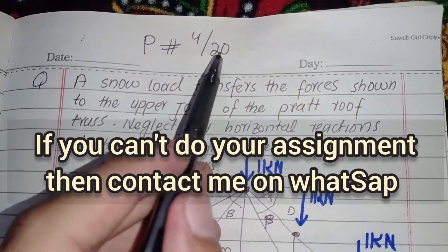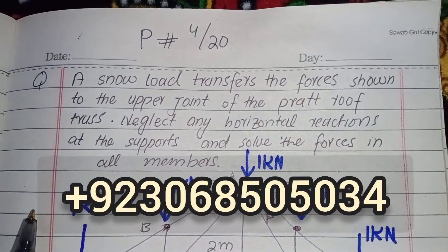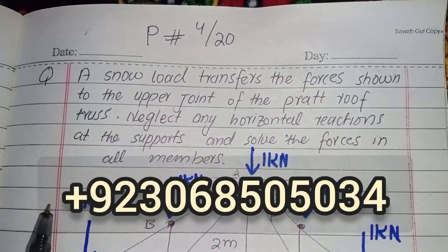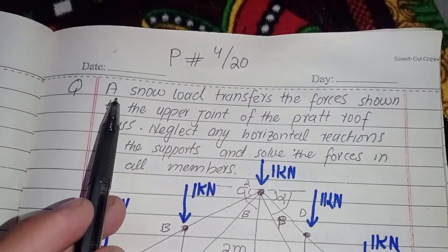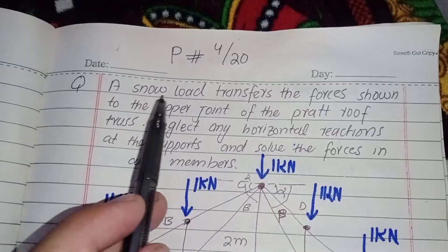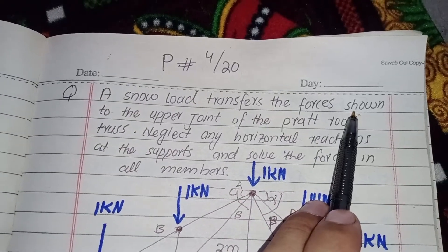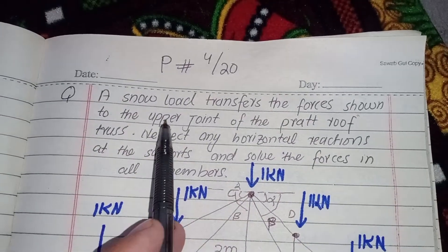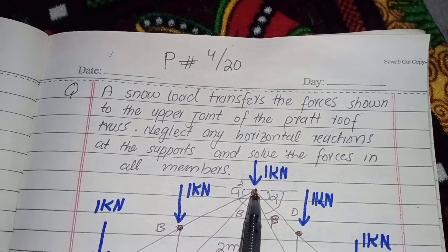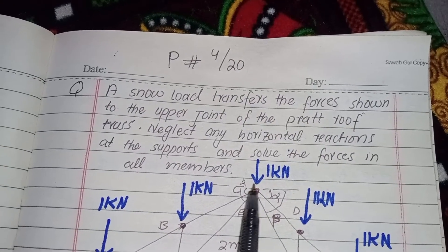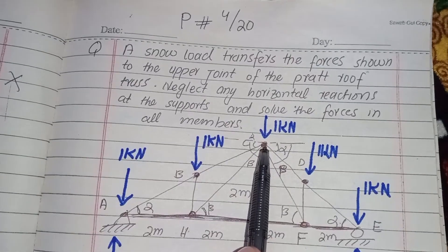Hello dear students. This is problem number 20 of chapter 4 of Engineering Mechanics Statics 9th edition. In this chapter, this is the loaded truss in which a snow globe transferred the force. Forces shown in the upper joint of the part roof. These are all the forces transferred to this joint.